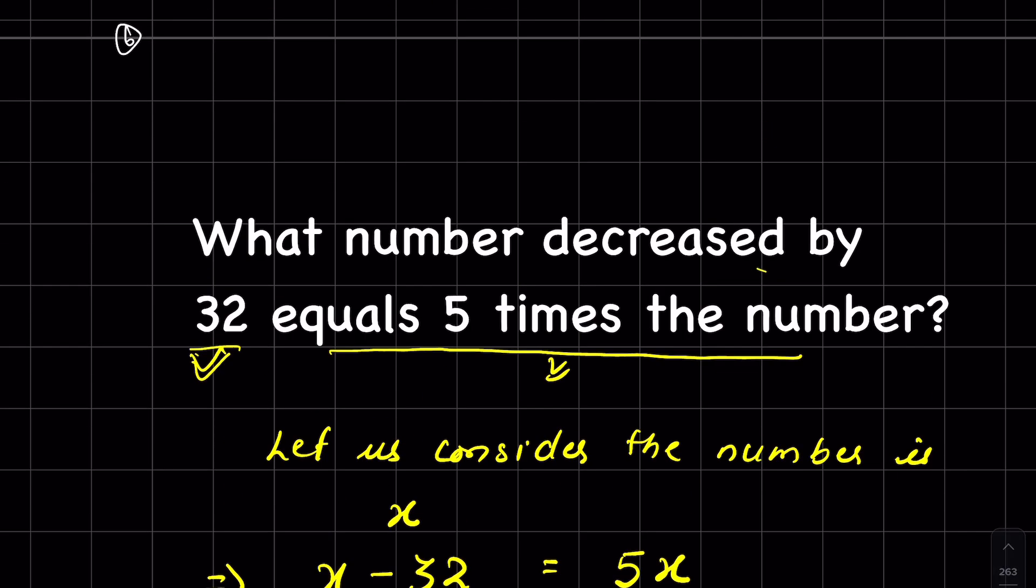Now we can verify this answer. When minus 8 is decreased by 32, it is minus 40, and minus 40 is 5 times minus 8. Our answer is verified.